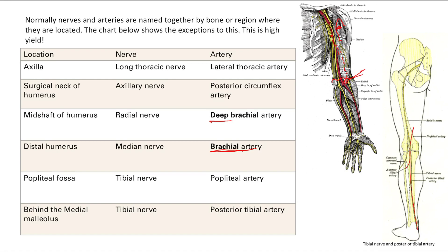Now we're going to go to the lower extremities, specifically the popliteal fossa, which is the back of the knee. It's the tibial nerve — remember the Baker cyst injury or knee injury. And the artery here is the popliteal artery.